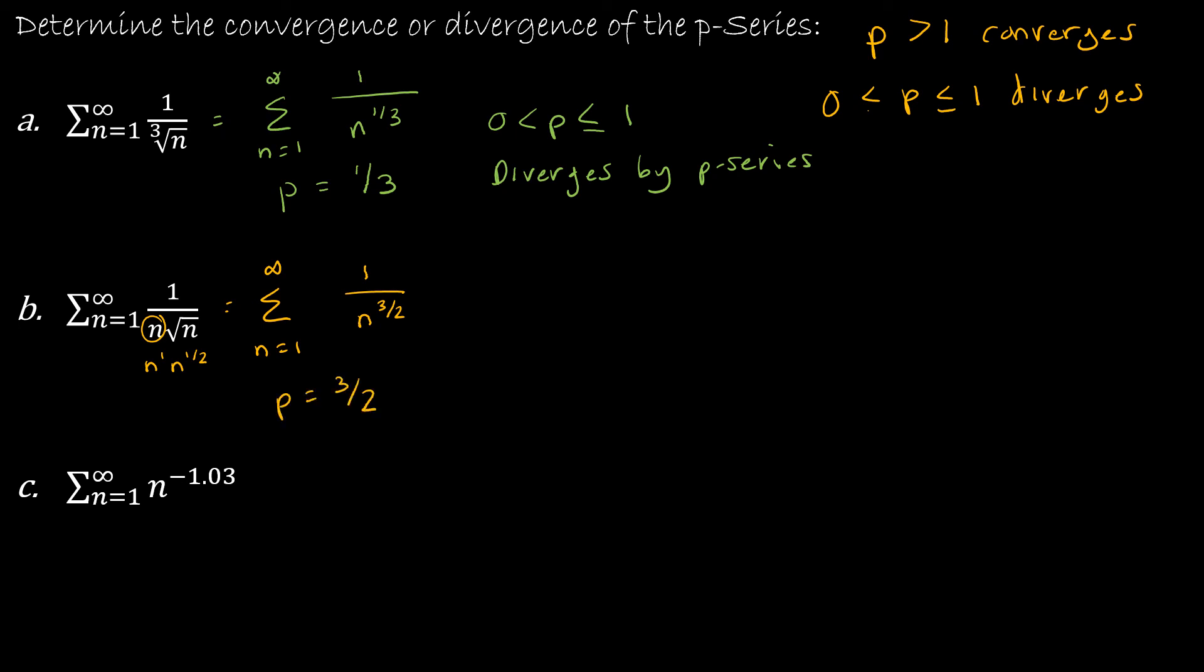Since p, 3 halves, is greater than 1, this converges by the p series. Or another way to write this is this is a convergent p series with p is equal to 3 halves, which is greater than 1.